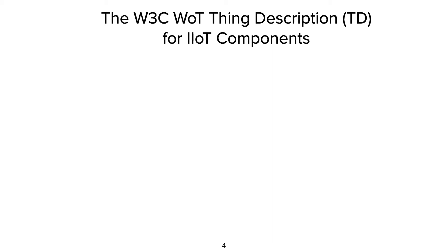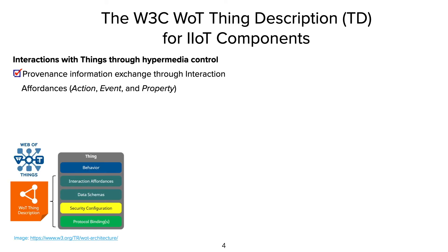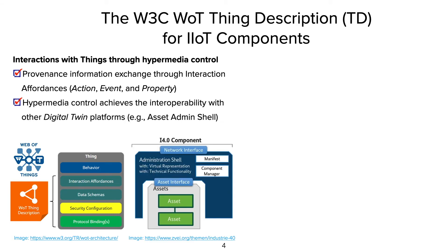To this end, we propose to use Thing Descriptions from the W3C Web of Things architecture. We describe each component in the systems using TDs, and define interaction affordances which can be used to exchange different types of provenance information by mapping them to actions, events, and properties of the component. They can be interacted with using hypermedia controls. With this, we can align digital twin platforms like Asset Administration Shell in the Industry 4.0 context.